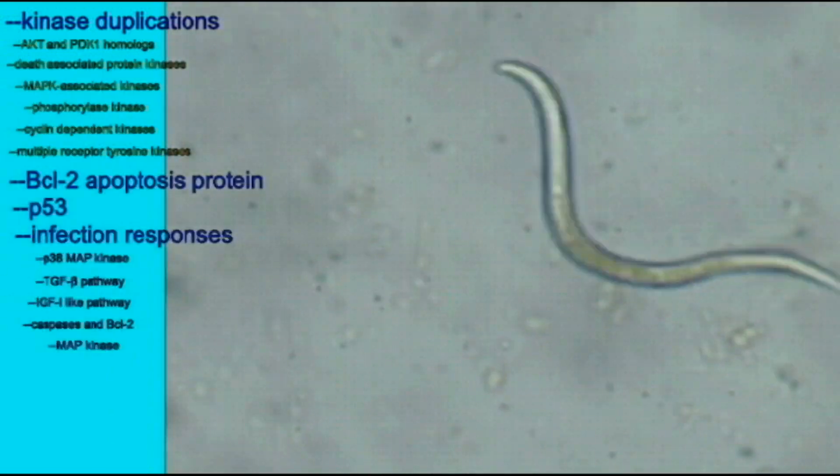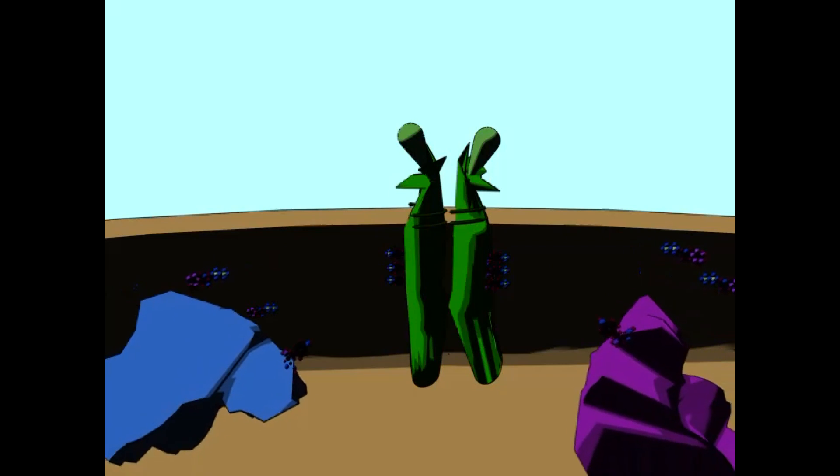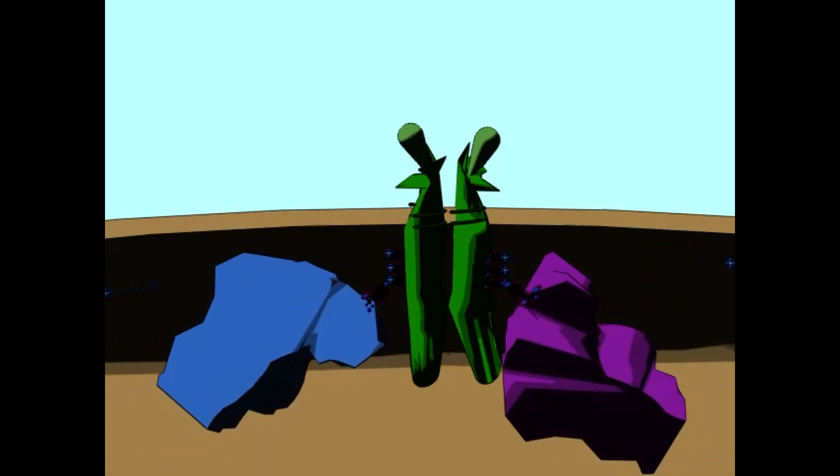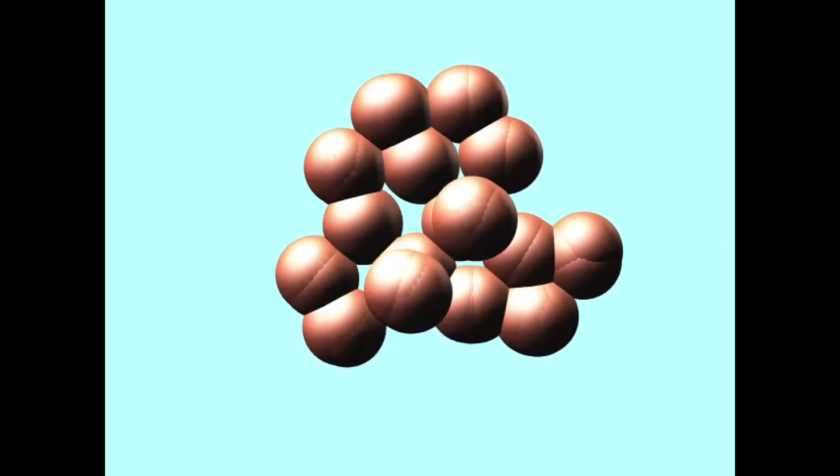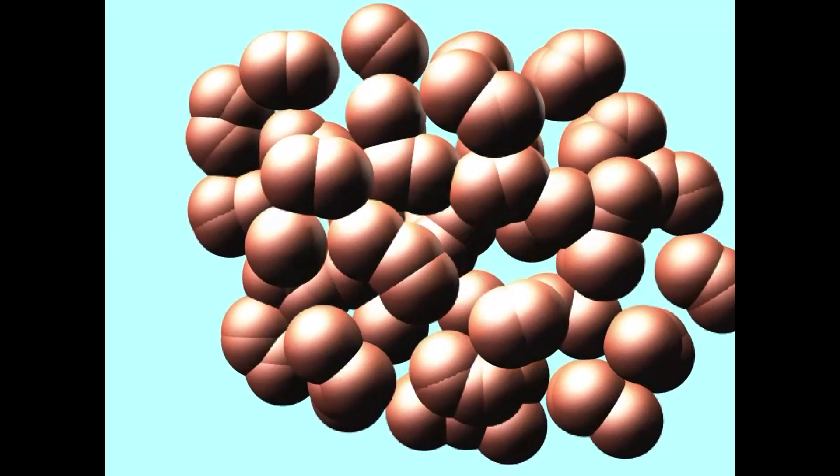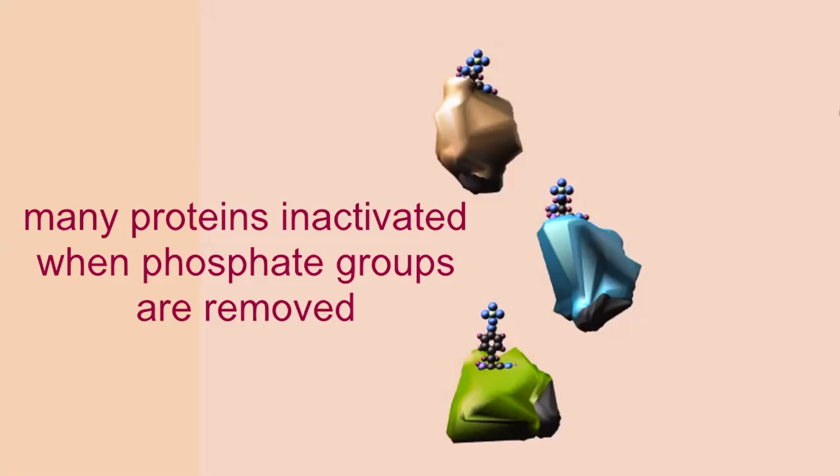The tyrosine kinases are frequently attached to receptors on the cell membrane, and their evolution and diversification were very important in metazoan animals. The mutation or misexpression of kinases are commonly a cause of disease, and many have been implicated in cancer.